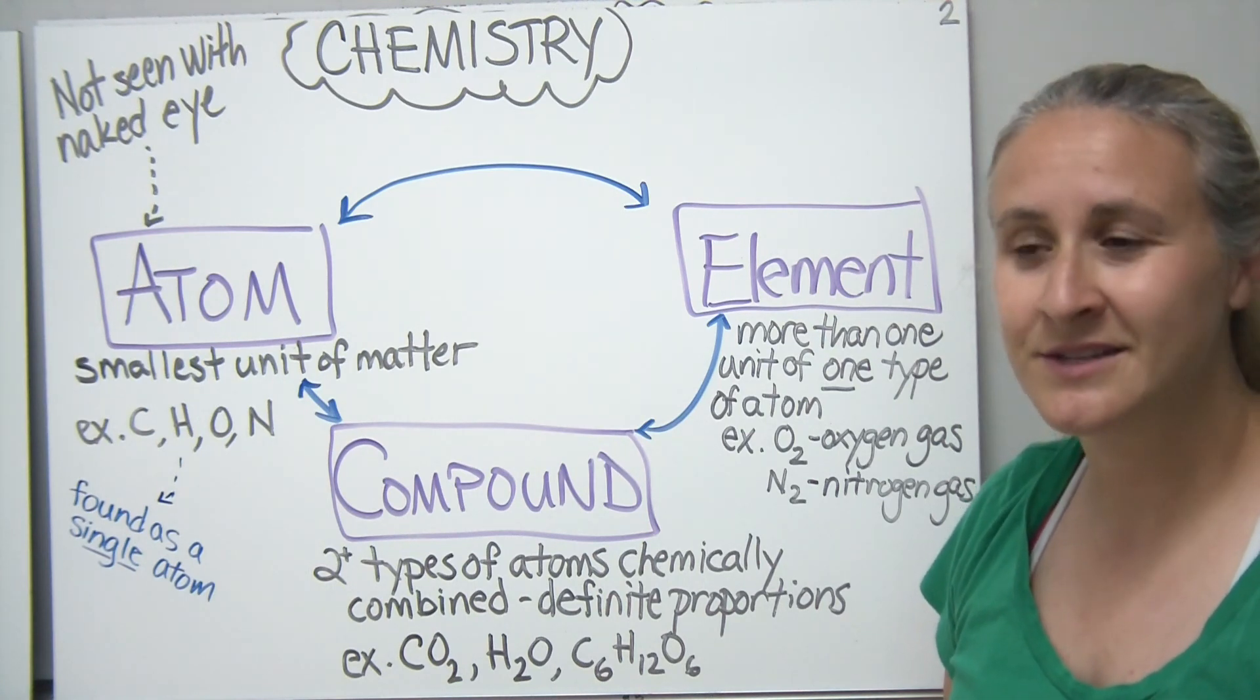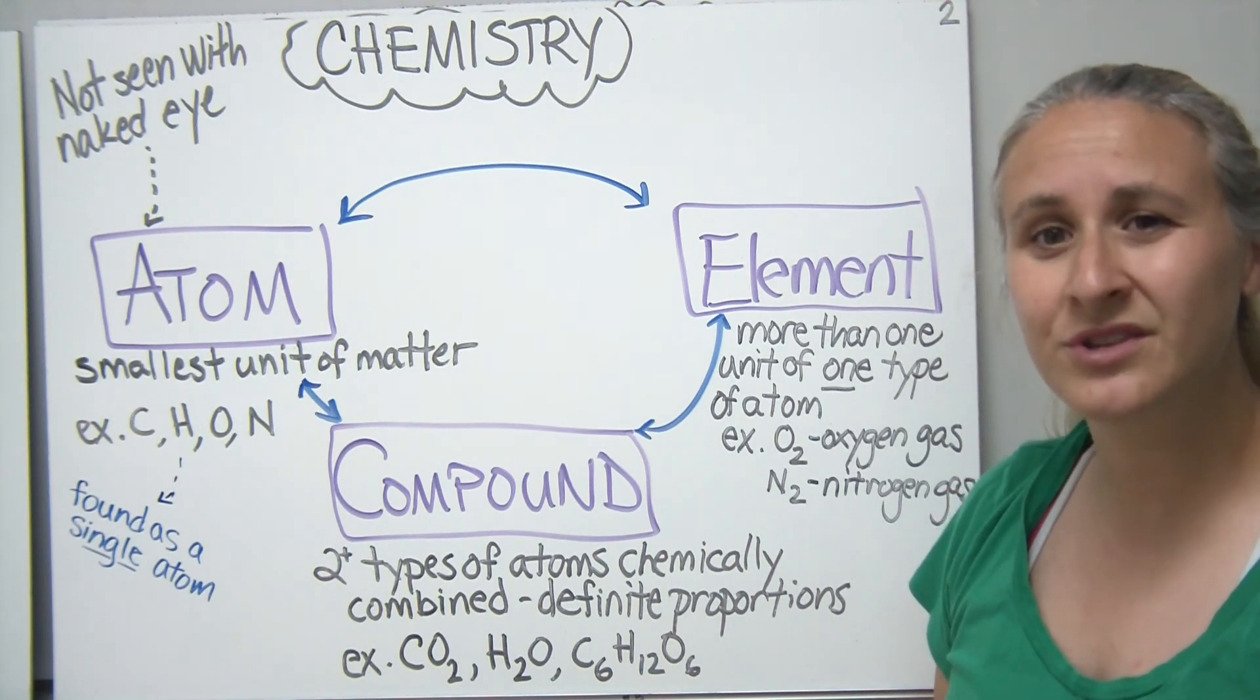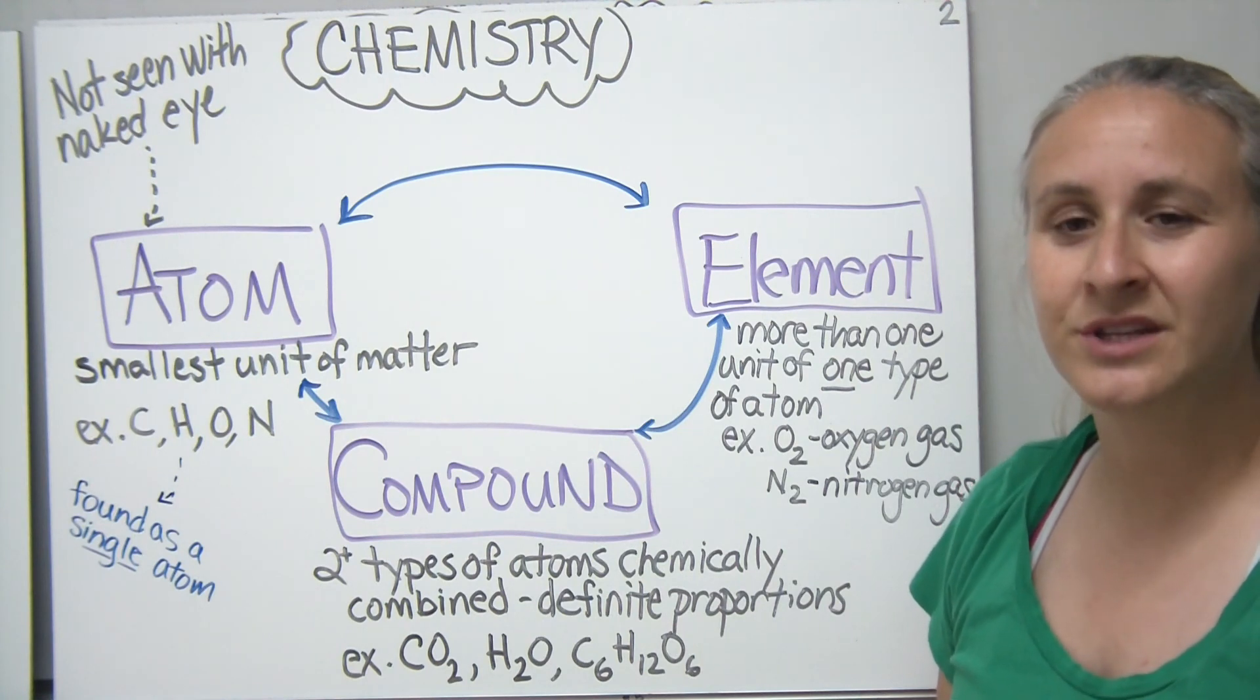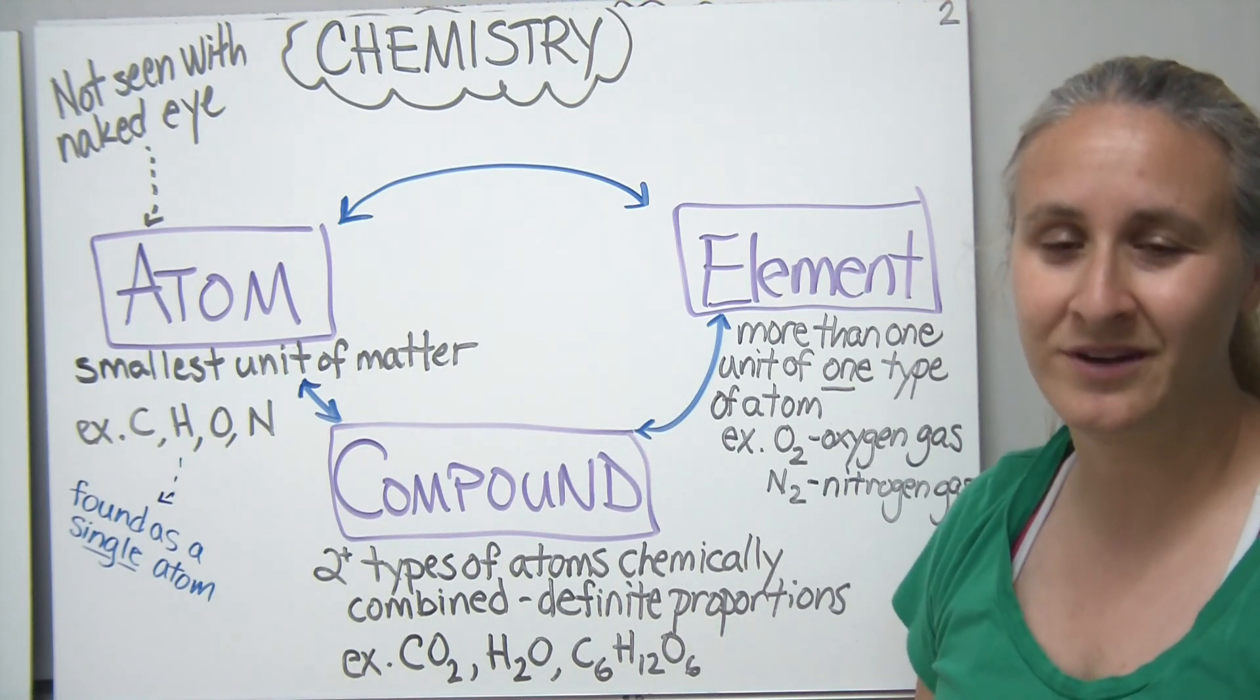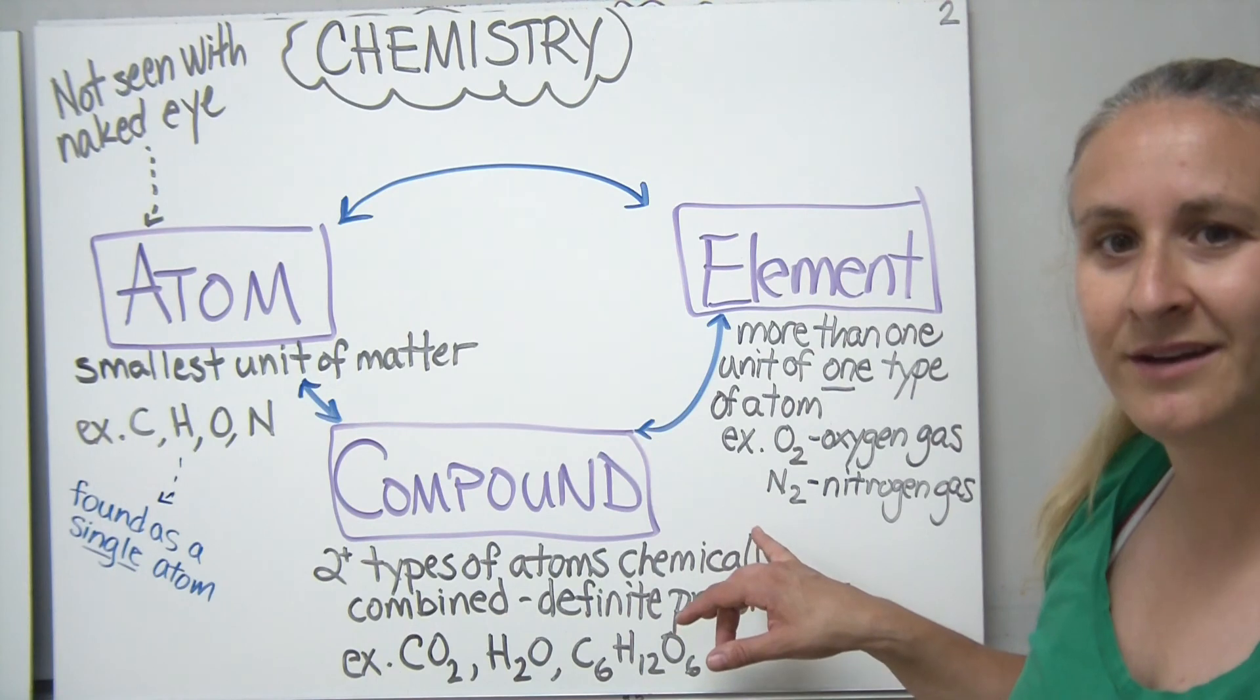That make up oxygen gas, in addition to the nitrogen gas that's in the air. Nitrogen usually doesn't occur in nature as one single atom. It's usually two nitrogen atoms bonded together making up that element of nitrogen gas. They're usually represented as O2 and N2.